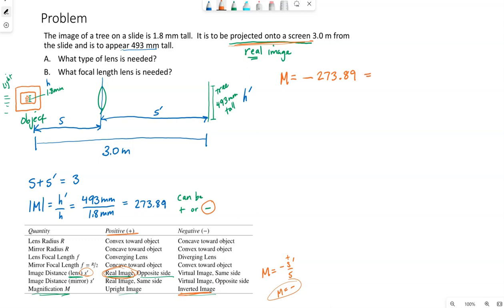Now, we know this is equal to negative S prime over S. So we now have two equations and the same two unknowns, S prime is the image distance, S is the object distance. So if I solve for S prime, for example, S prime is going to be 273.89 times S. Those negative signs on both sides will cancel, which means S prime is going to be positive, which makes sense.